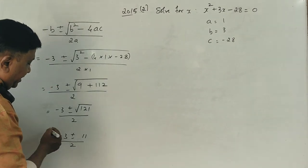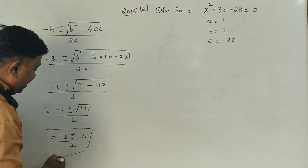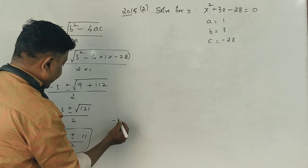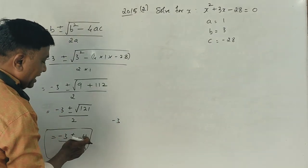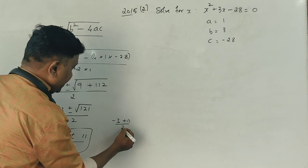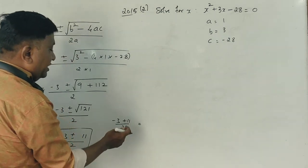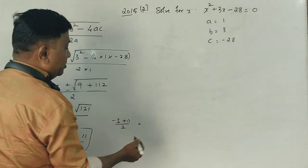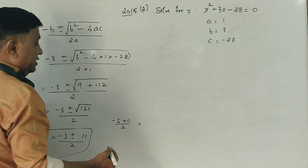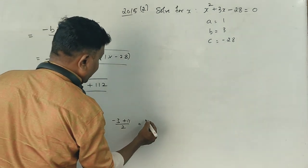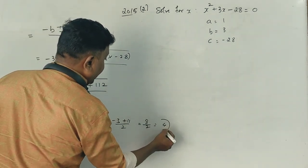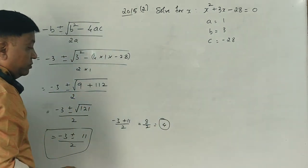So the actual answers are: x is equal to minus 3 plus 11 divided by 2, which gives 8 divided by 2, so the answer is 4. And x is equal to minus 3 minus 11, which gives minus 14 divided by 2, so the answer is minus 7.